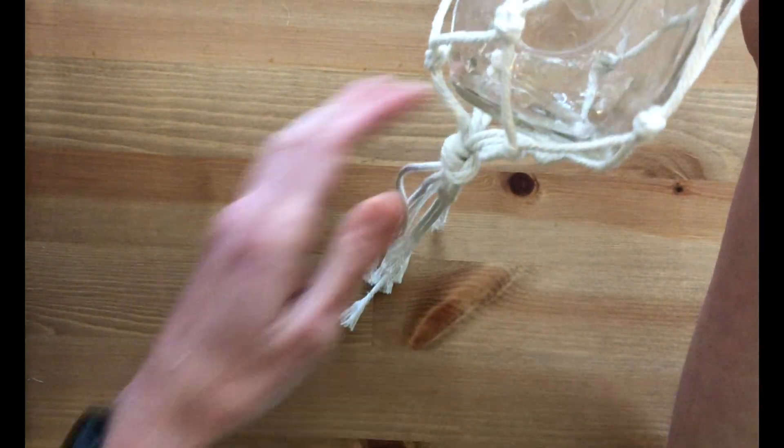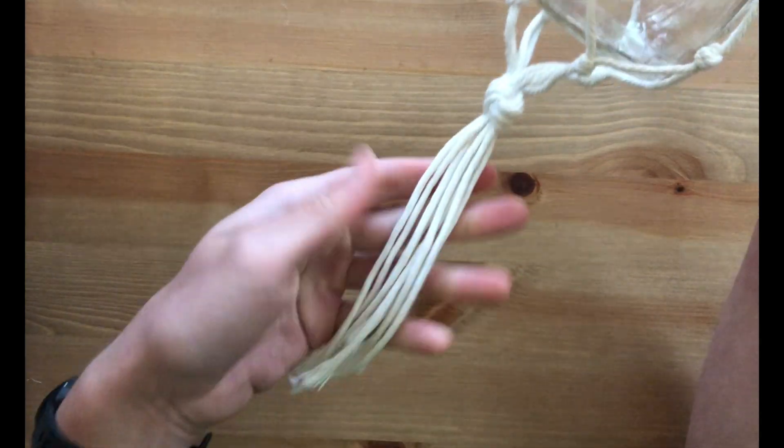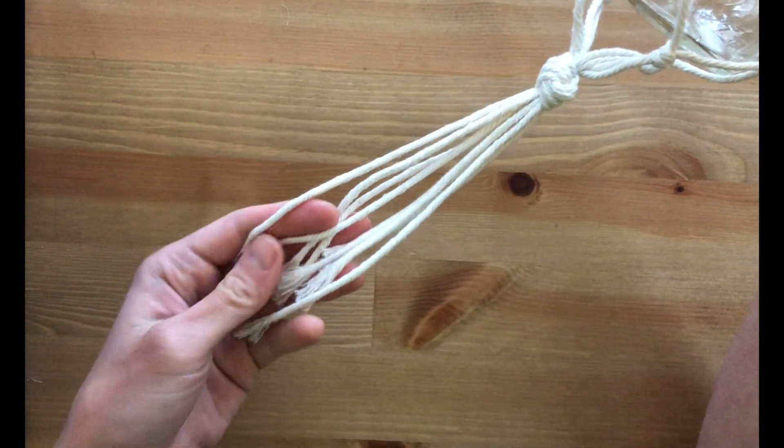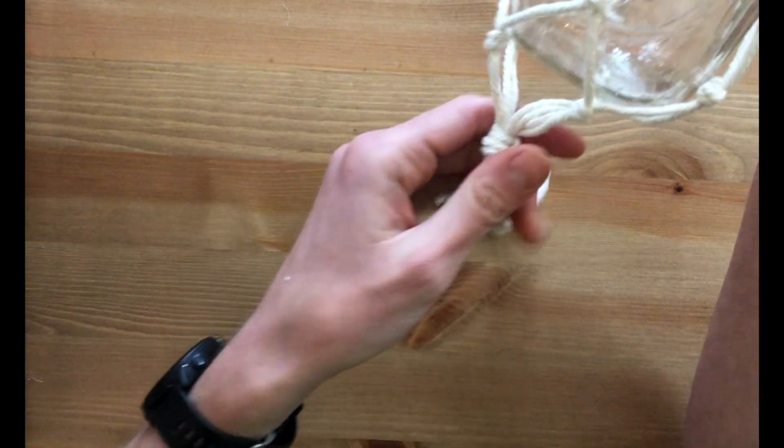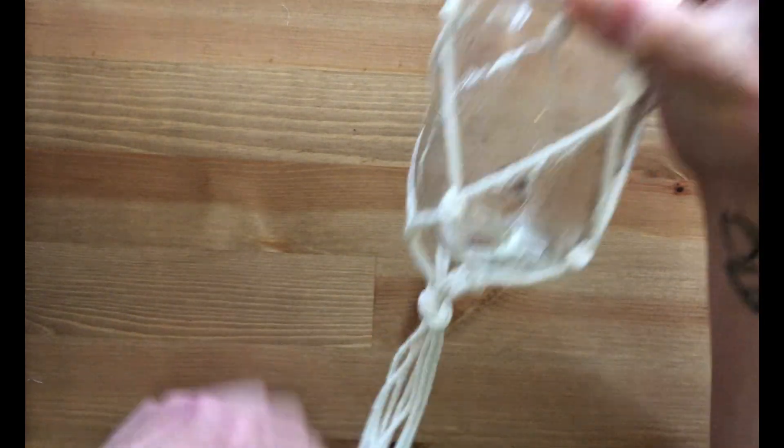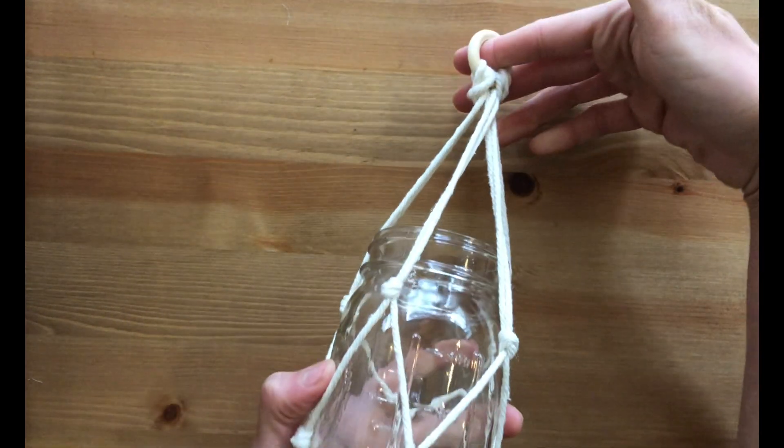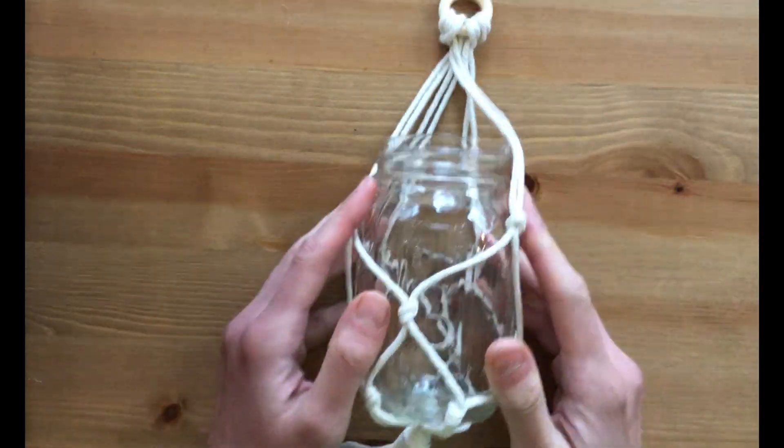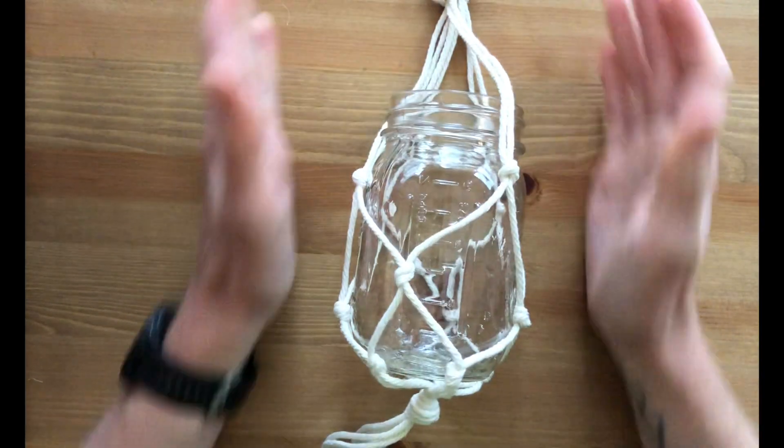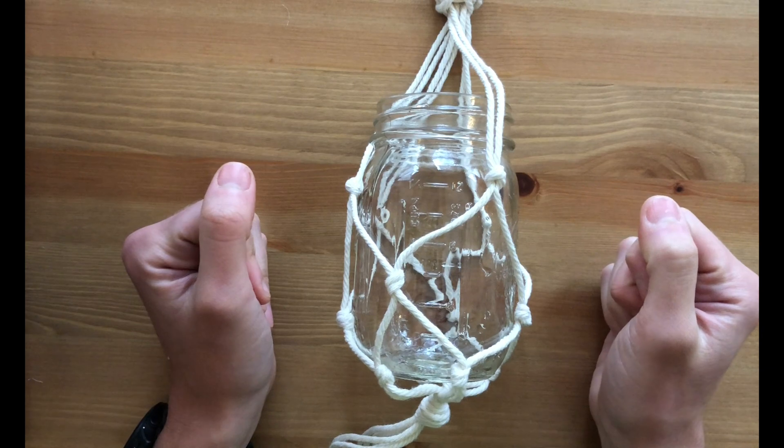If you want, you can, I like this loose end. It looks kind of rustic. But you could also braid these ends or you could trim them. It's up to you. But that is the basic macrame hanging jar holder craft for January's adult craft kits.